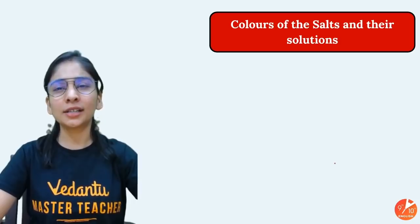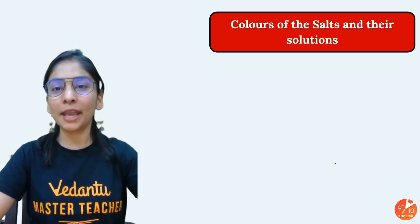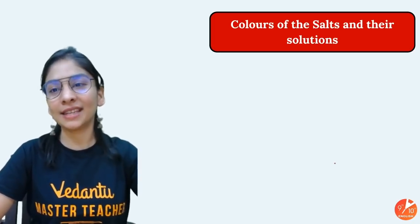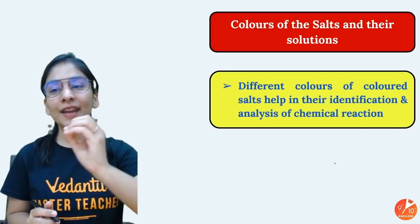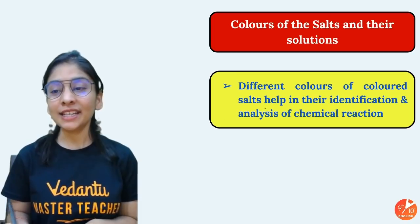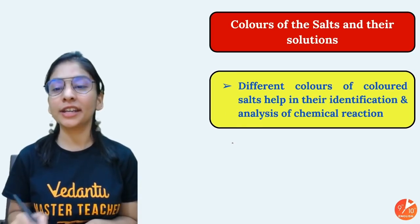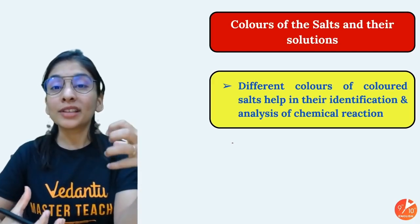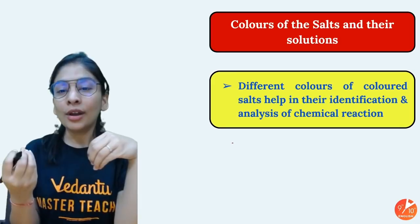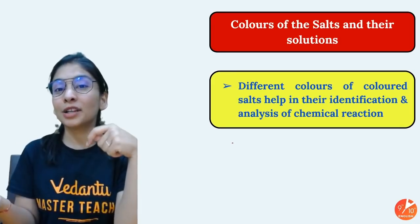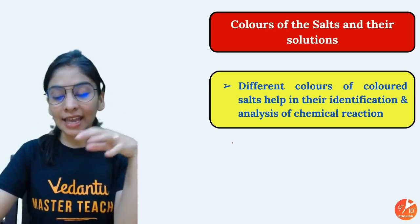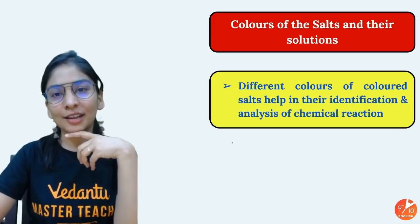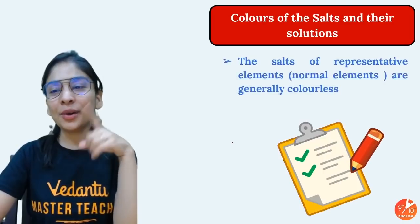Now let's enter the world of colors of compounds. The color of a compound depends on exactly what is present in it — what elements and ions are responsible. Different colored salts help in their identification and analysis of chemical reactions. Sometimes we're not sure what color we'll get, so I'll give you all the hints and tricks. Generally, colored substances appear in displacement and double displacement reactions.